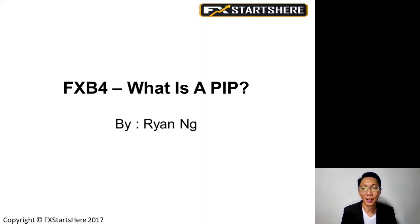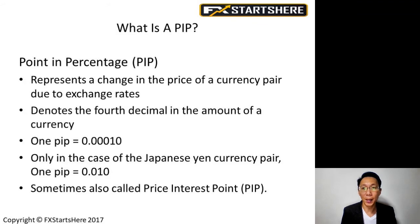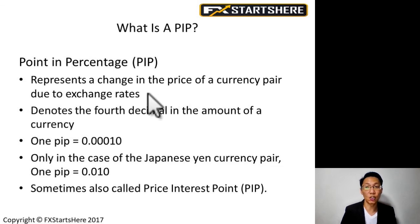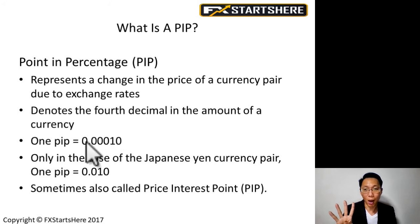Hi everyone, Ryan here again. Today's topic is: what is a PIP? A PIP is short for 'point in percentage.' It represents a change in the price of a currency pair due to exchange rates, and denotes the fourth decimal in the amount of a currency. Very important — remember the fourth decimal. One PIP equals 0.0001.